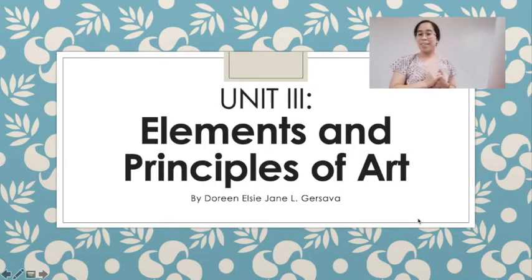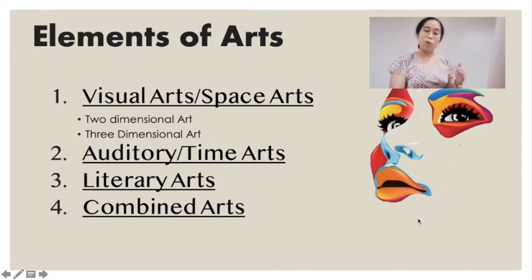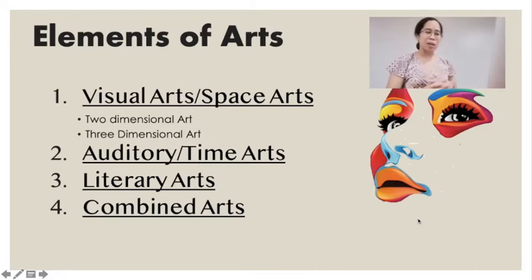So we are here with the elements and principles of art. First of all, we have to identify the categories under arts, so that we would know where a kind of art form falls. We have these four kinds or four elements that we are describing here.